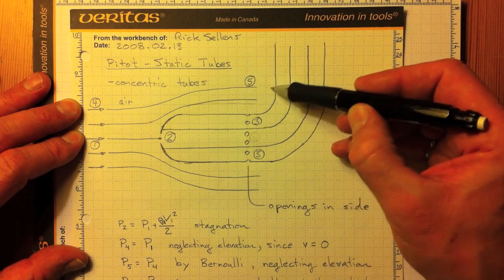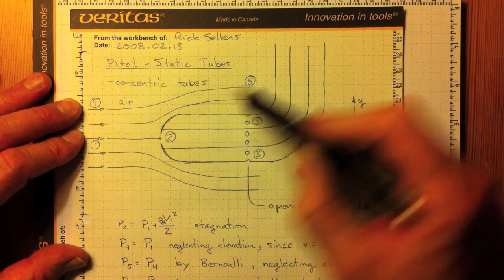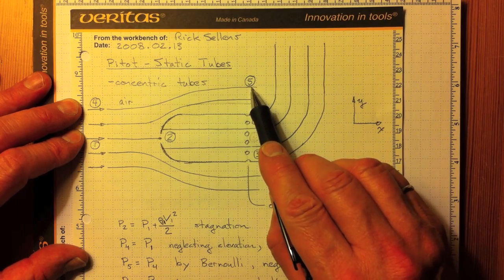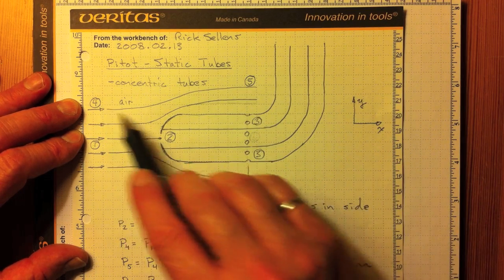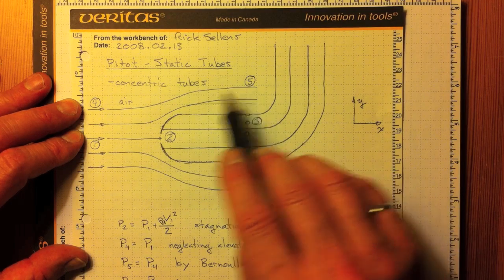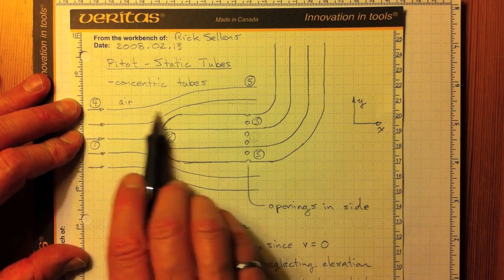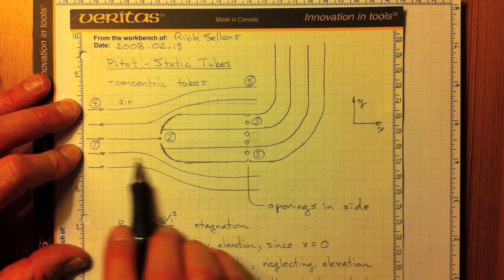Now, because these streamlines are going in a straight line, the pressure at 3 will be the same as the pressure at 5. Because the velocity is the same at 5 as it was at 4, and the elevation difference is negligible, then the pressure at 5 will be the same as the pressure at 4.